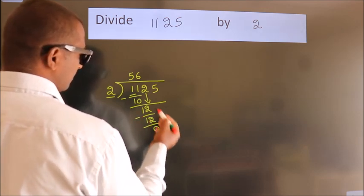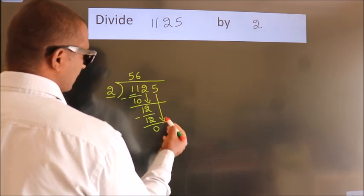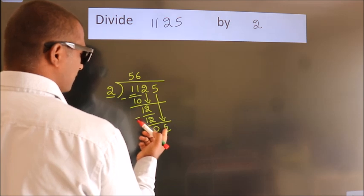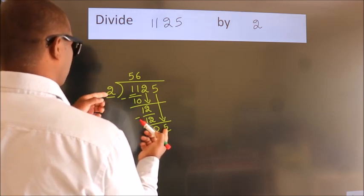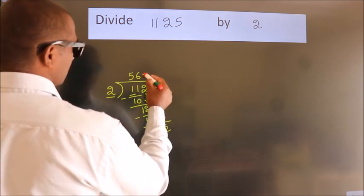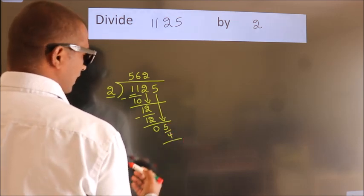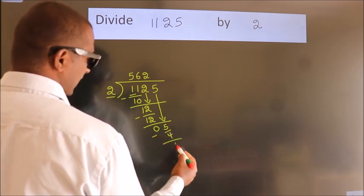After this, bring down the beside number. So 5 down, so 5. A number close to 5 in 2 table is 2 twos, 4. Now we subtract, we get 1.